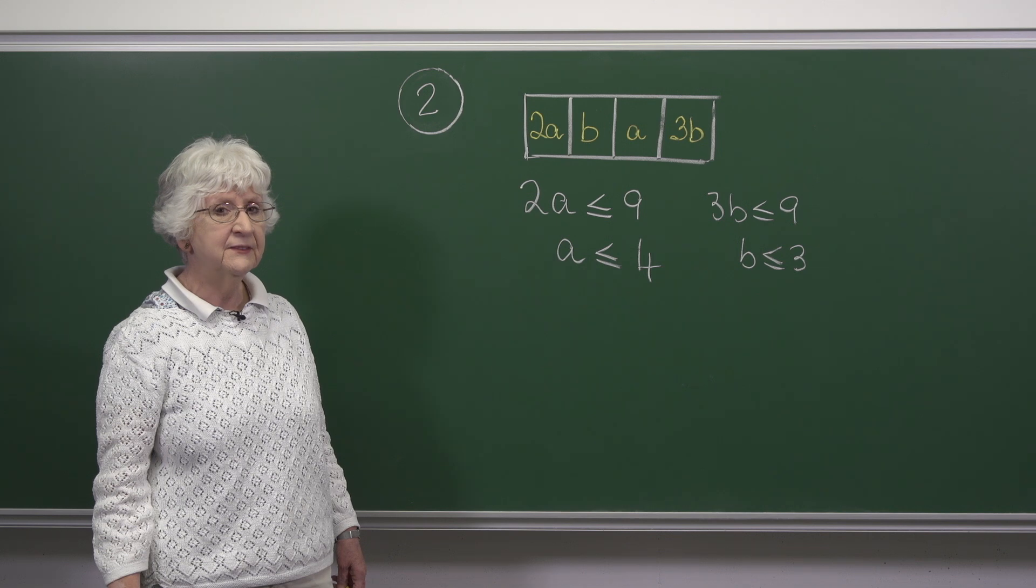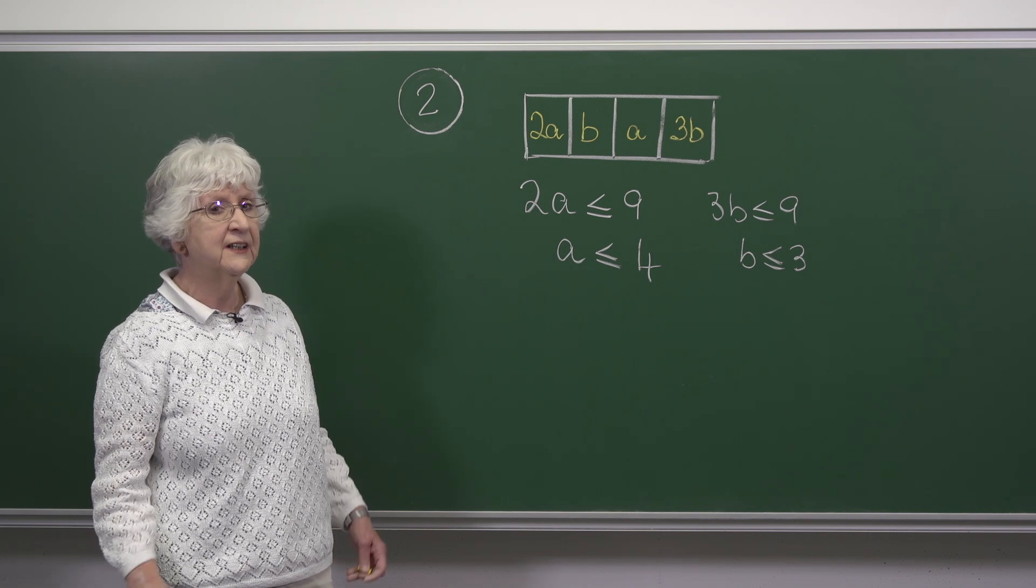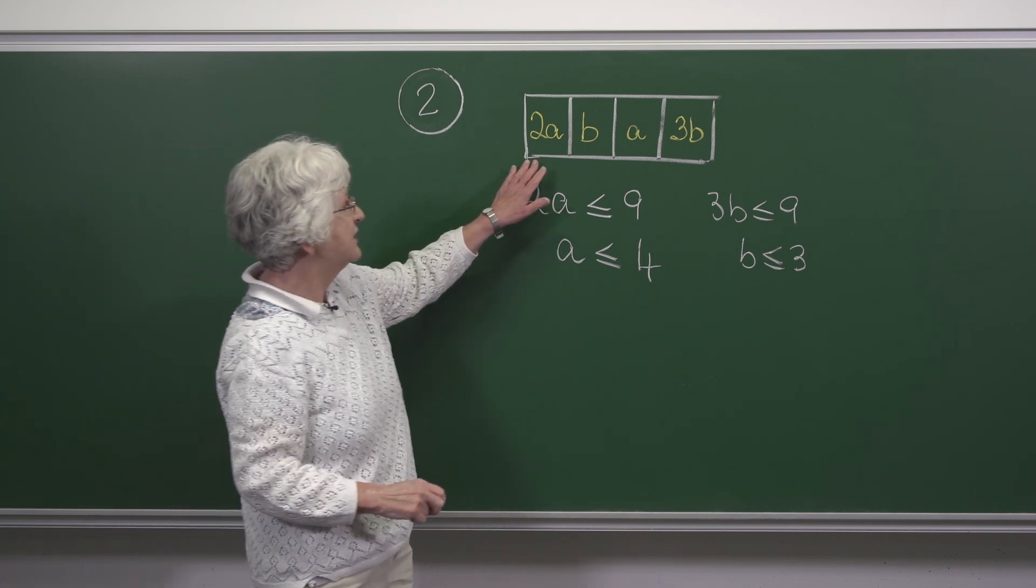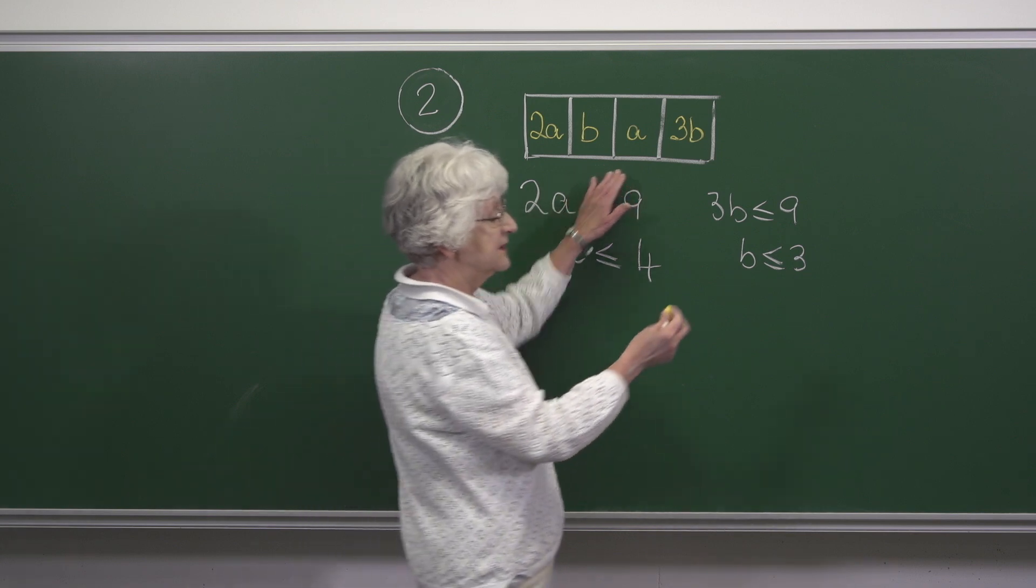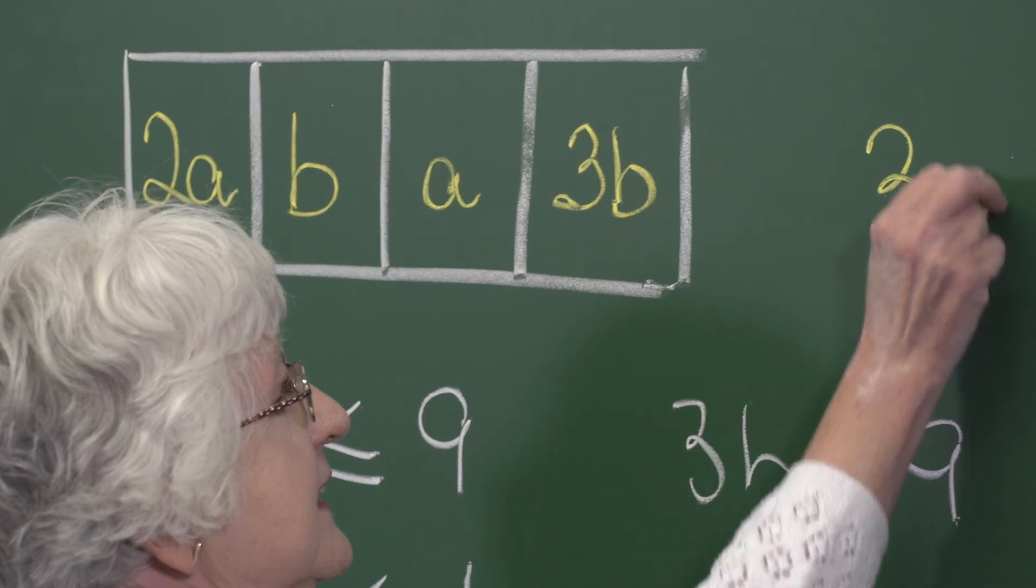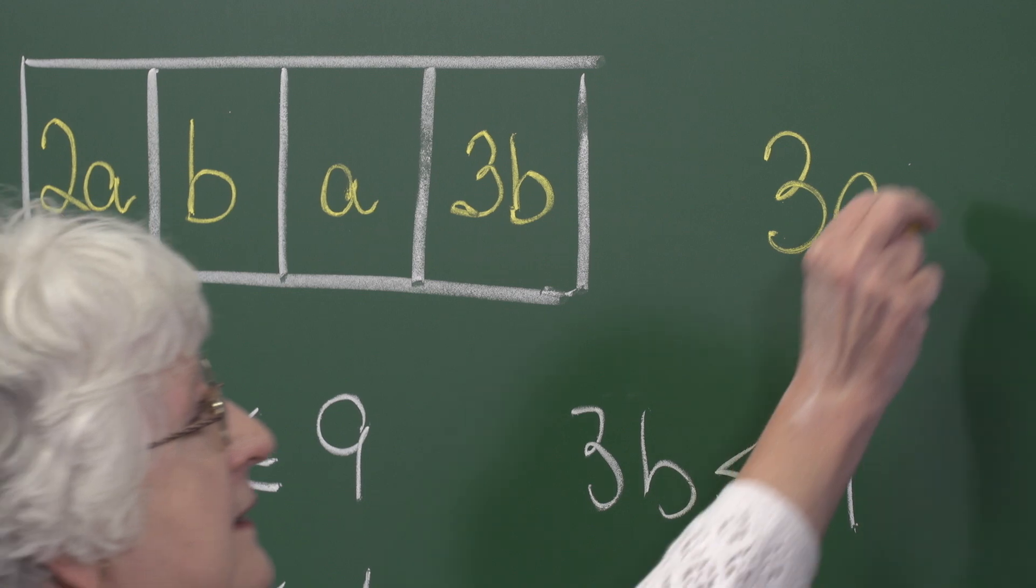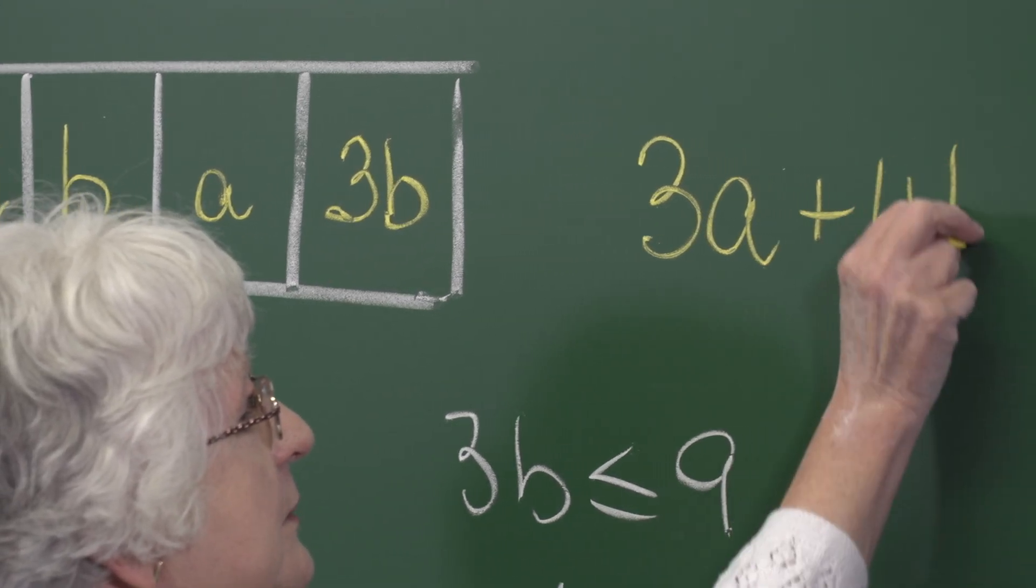We are told that the sum of the digits is a multiple of 9 so let's sum the digits up. 2a plus a is 3a and b plus 3b is 4b.